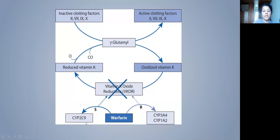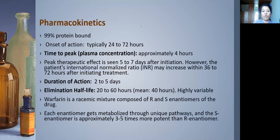Warfarin has S and R enantiomers metabolized by different cytochrome P450 enzymes in the liver. The VKORC1 enzyme complex converts oxidized vitamin K back to reduced (active) vitamin K, which is needed by gamma-glutamyl carboxylase to activate clotting factors. Warfarin inhibits this conversion, preventing factor activation. It is highly protein-bound, onset of action takes 1–3 days, peak plasma concentration is at approximately 4 hours, but peak therapeutic effect is seen in 5–7 days. Duration of action is 2–5 days.